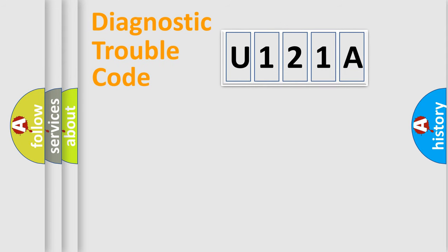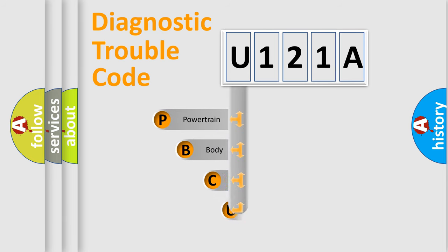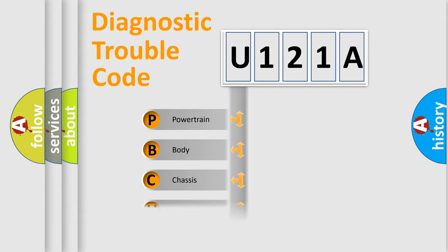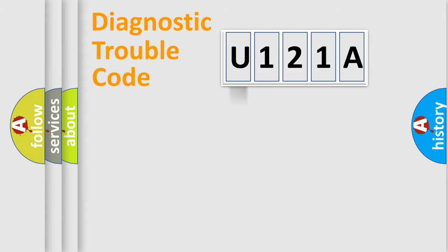Let's do this. First, let's look at the history of diagnostic fault code composition according to the OBD2 protocol, which is unified for all automakers since 2000. We divide the electric system of the automobile into four basic units: Powertrain, Body, Chassis, and Network.